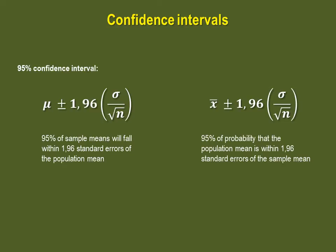Second, we can determine an interval from the sample mean within which the population mean should be. So we can say that 95% probability that the population mean is within 1.96 standard errors of the sample mean.